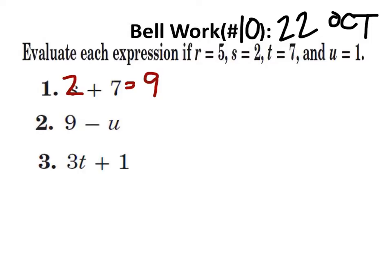What did you guys get for number 2? 8 — that's very good. U is 1, so 9 minus 1 is 8. What's the value of T? 7. So 3 times 7 plus 1 equals 22. Excellent work.